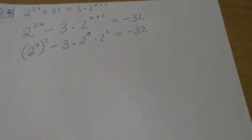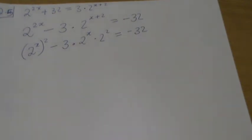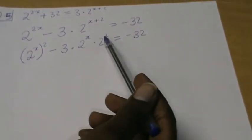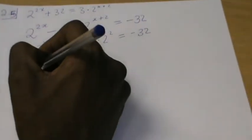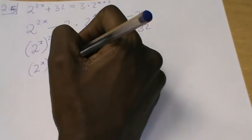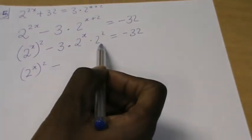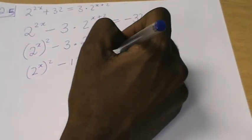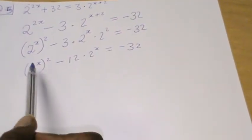Now, 2 to the power of x is a common factor — you might be tempted to factorize it out, but you'll notice that if you do, you'll still have 2 to the power of x inside the brackets. First, let me simplify: 3 times 2 to the power of x times 2 squared — 2 squared is 4 — so that gives 12 times 2 to the power of x. So we have 2 to the power of x squared minus 12 times 2 to the power of x equals negative 32.